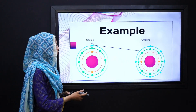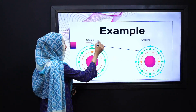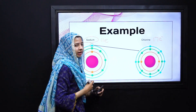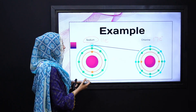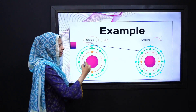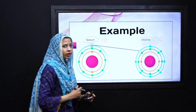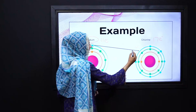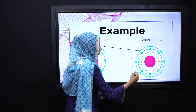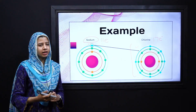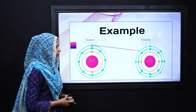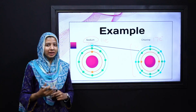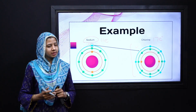Agar hum baat karayin sodium aur chlorine ki, toh sodium ke paas chunke 11 electrons hain aur chlorine ke paas chunke 17 electrons hain. According to valence electrons, sodium has one valence electron and chlorine has seven valence electrons. So in order to stabilize itself, sodium apne ek electron ko donate kar dayega chlorine ko. Chlorine ke paas ek electron ki kami hai in order to achieve the octet rule, toh ye sodium se ek electron lega aur apna octet rule complete karega, valence shell complete karega, aur khud ko stabilize karega.